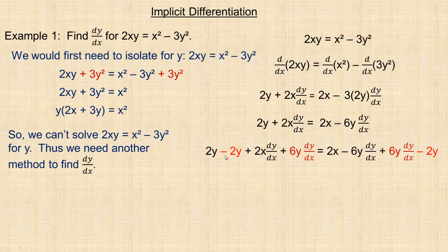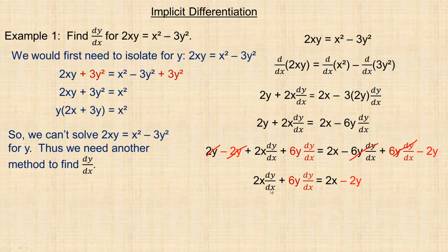I'm going to subtract 2y from both sides to move the 2y term, and add 6y·dy/dx to move the negative 6y·dy/dx term over to the left. Those terms cancel out, and what we're left with on the left side is the dy/dx terms, and on the right is 2x minus 2y. Now I factor dy/dx out of the left side, giving dy/dx times (2x plus 6y).